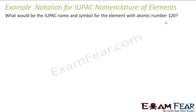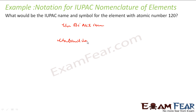For atomic number 120: 1 is 'un', 2 is 'bi', and 0 is 'nil', then we append 'ium'. So the temporary name will be 'unbinilium'. The temporary IUPAC symbol will be 'Ubn'. So Ubn is the symbol for element 120.